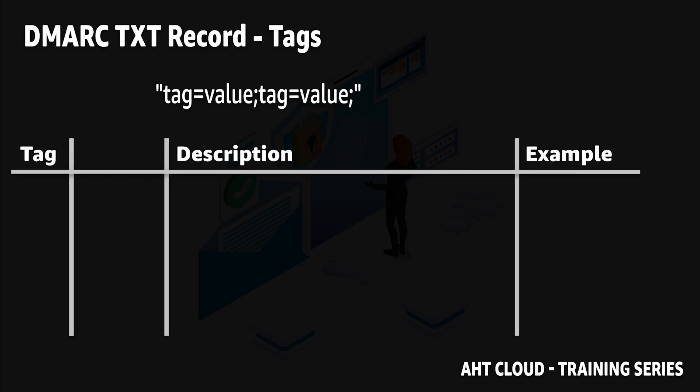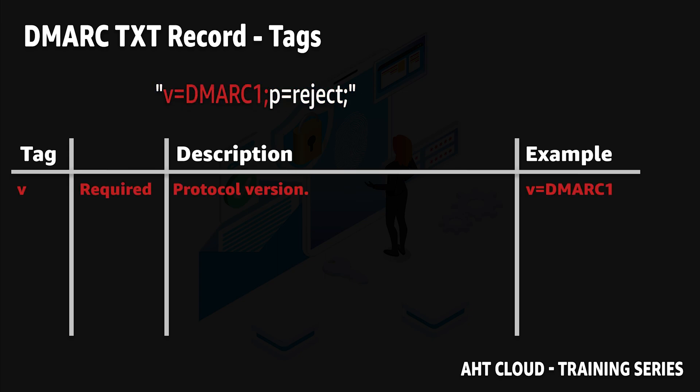At the bare minimum, your DMARC record should look something like this. The v tag specifies the DMARC protocol version — there is only one DMARC version available, which is DMARC1. This is a required field, so you should always have it included in your DMARC record.